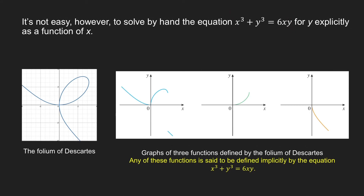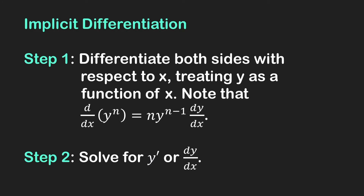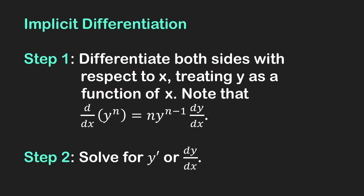Here is the two-step procedure for finding the derivative of y with respect to x when your function is defined implicitly by an equation. Step 1: differentiate both sides of the equation with respect to x, treating y as a function of x. Using the extended power rule with the chain rule, the derivative of y raised to n with respect to x equals n times y raised to n minus 1 times dy over dx. Step 2: solve for y prime, or dy over dx, in the resulting equation.